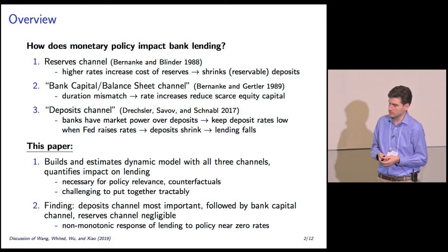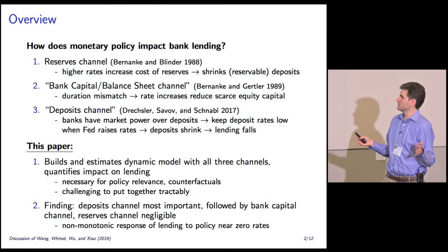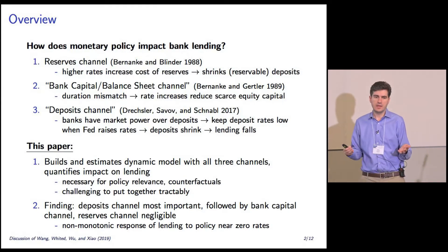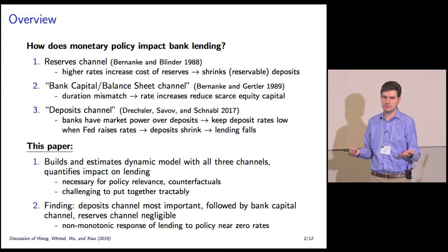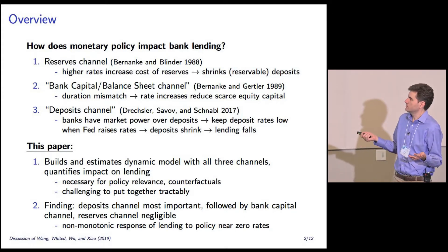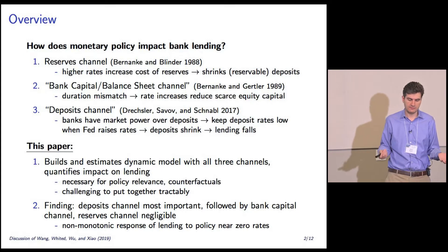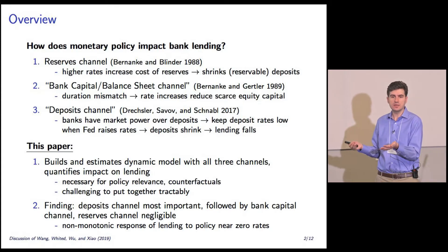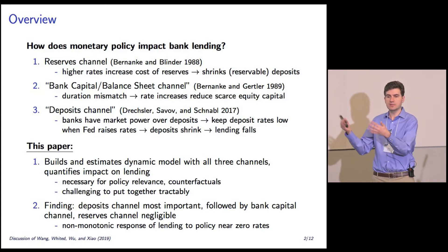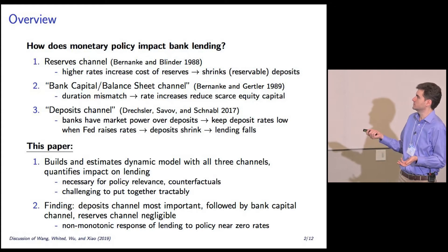What this paper is going to do is something pretty ambitious. It's going to build an estimated dynamic model that has all three channels in it, doing that because it wants to quantify their impact. That's really important — it's necessary for policy relevance. When you talk to people at the Fed, they want to know how much they should care, and that depends on how big this thing is compared to all these other things.